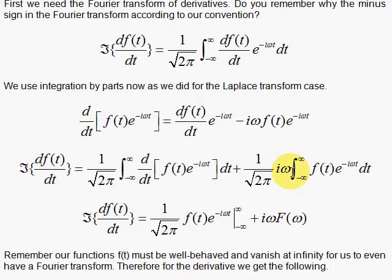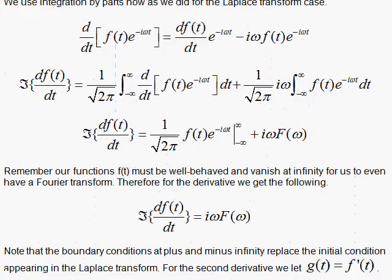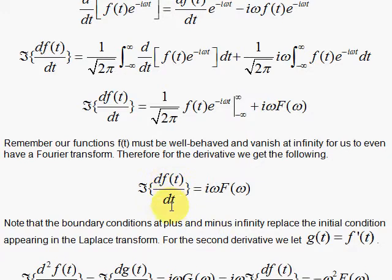Then the second one here that came from this one on the other side has the plus i omega. And it's simply the Fourier transform of f of t, which is capital F of omega. i omega hits it in front. So we have this neat little formula, Fourier transform of the derivative, i omega, times the Fourier transform of the function.